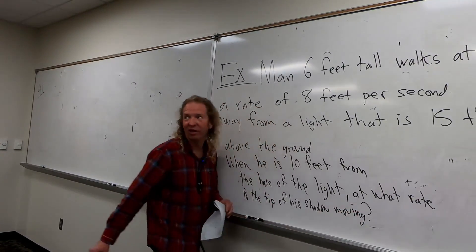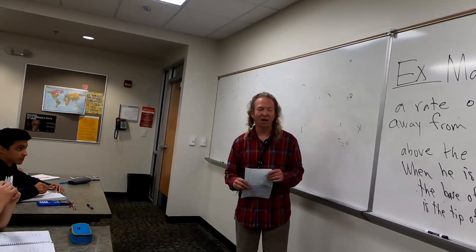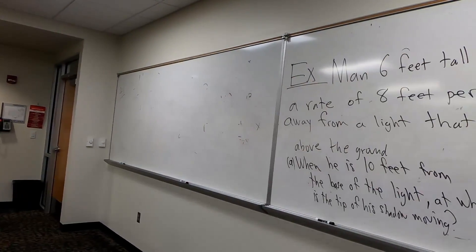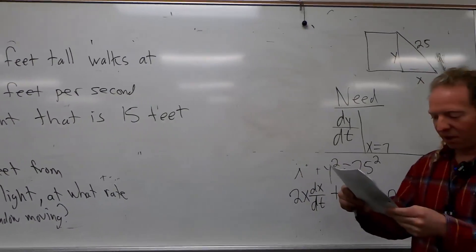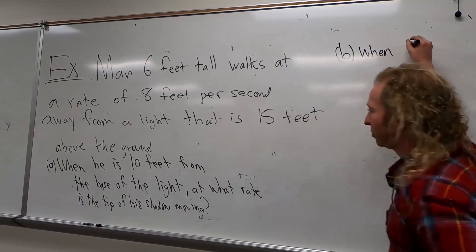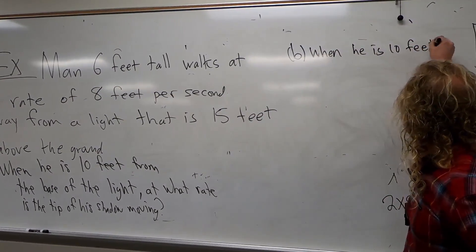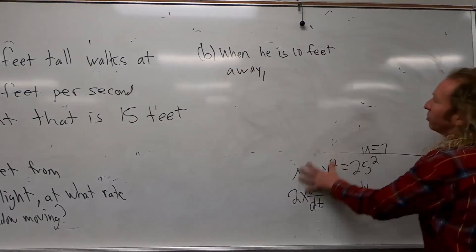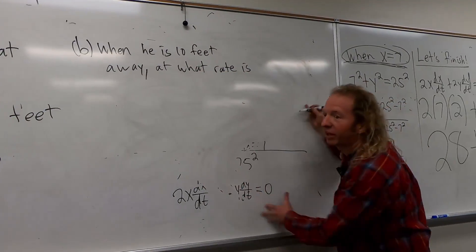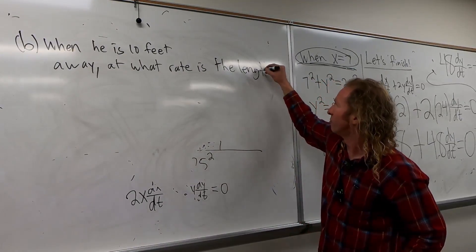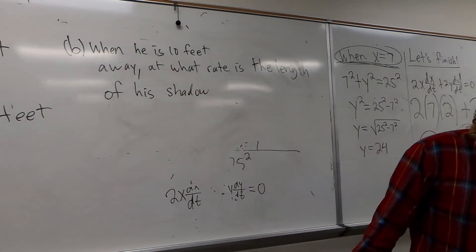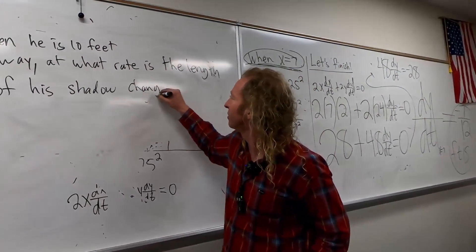Give me some time to write it and we'll go over it very slowly. Do we have to find how long his shadow is? Yes, we will — that's part A. So part A asks that, and part B wants to know at what rate is the length of his shadow changing. So when he is 10 feet away, at what rate is the length of his shadow changing? Changing — that makes more sense. Take your time, write it down, we'll go over it very, very slowly.